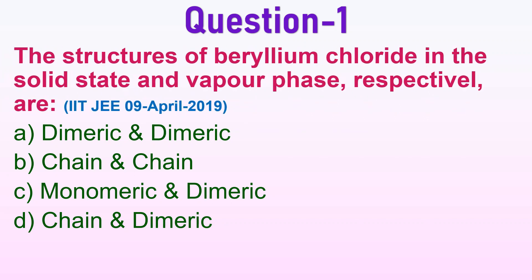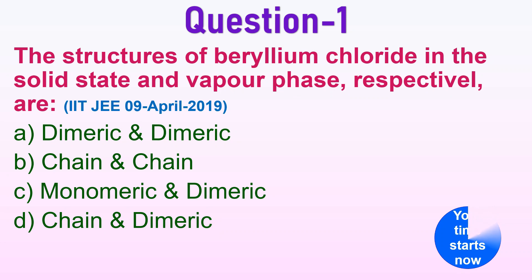Now let us try a previous year IIT JEE question. 'The structures of beryllium chloride in the solid state and vapor phase respectively are:' Option A — dimeric and dimeric. Option B — chain and chain. Option C — monomeric and dimeric. Option D — chain and dimeric. The correct option is D, that is chain and dimeric. Beryllium chloride has a chain structure in the solid state, whereas it is dimeric in the vapor phase.